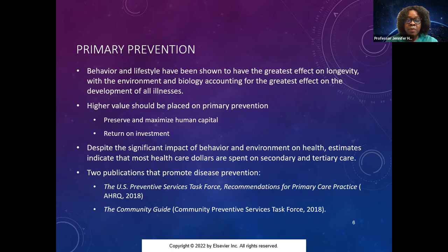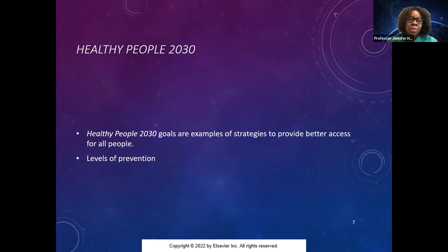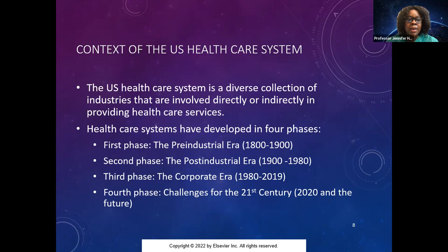The U.S. Prevention Task Force recommendations for primary care practice outline the use of regular screenings and risk factor identification at various stages — that's your secondary prevention. Primary prevention is the one we really want to harp and focus on. The U.S. health care system developed slowly over several phases starting in the 1700s, going through first, second, third, and fourth phases. It's a matter of understanding that it evolved over time.